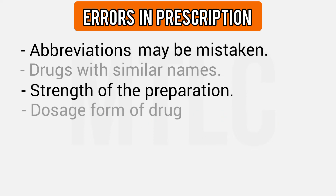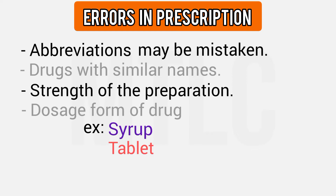Another error is the dosage form of the drug. For example, say the drug is available as a syrup, but you prescribe it in tablet form — that drug may not be available in tablet form, so you cannot use it. The dosage form of the drug must be prescribed correctly. Generally, the dosage form such as tablet or capsule should be clearly noted on the prescription.